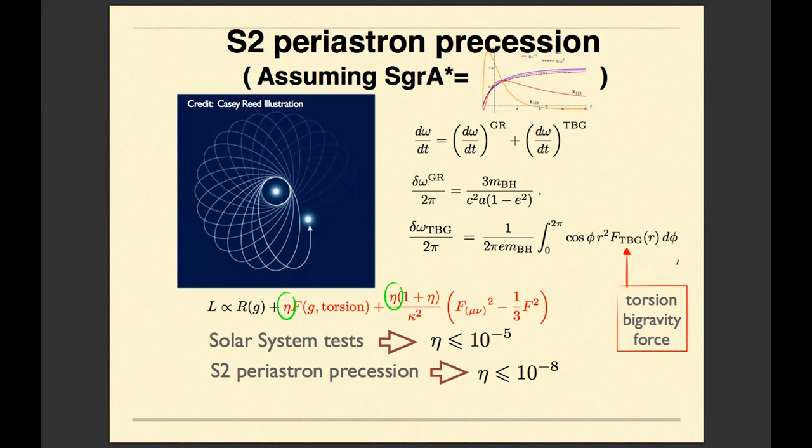If I assume that the central object is my black hole, of course, it is not necessary. Maybe it is not my black hole. Maybe it is a black hole of GR type. So this is what I do.